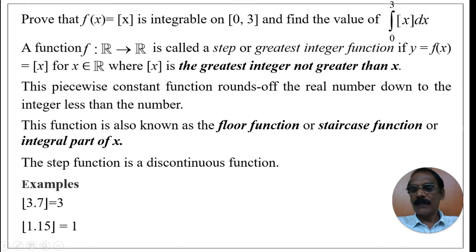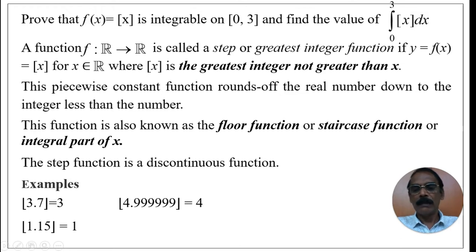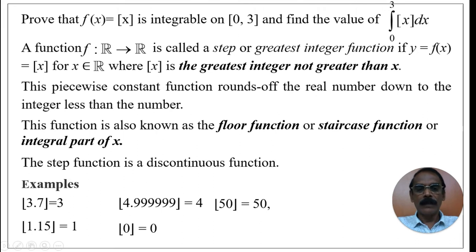Similarly, the step function of 1.15 equals 1. The integers not greater than 1.15 are 1, 0, −1, −2, −3, and so on. Among these, 1 is the greatest, so the value is 1. Also, [4.9999] = 4. If x is an integer, the value of the step function is x itself: the integral part of 0 is 0, the integral part of 50 is 50, and the integral part of −261 is −261.